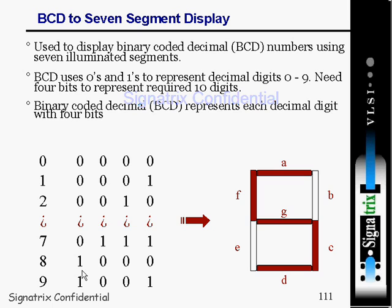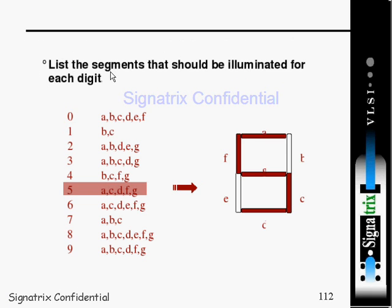Now, BCD to seven segment display is used to display binary coded decimal numbers using seven illuminated segments — this is a seven segment decoder. BCD uses zeros and ones to represent decimal digits 0 to 9. You need four bits to represent all ten digits. Binary coded decimal represents each decimal digit with four bits, so to display any digit from 0 to 9 you need four bits.